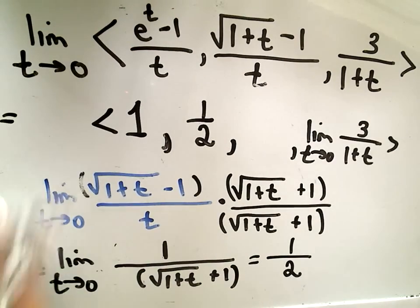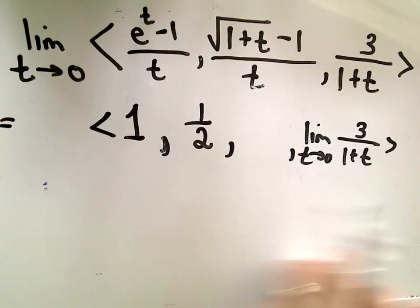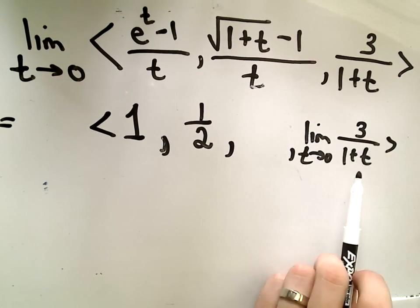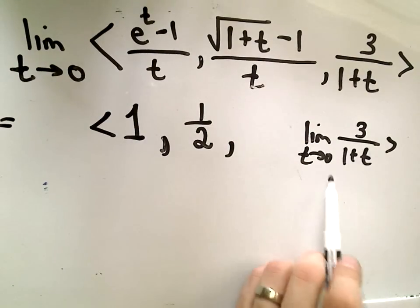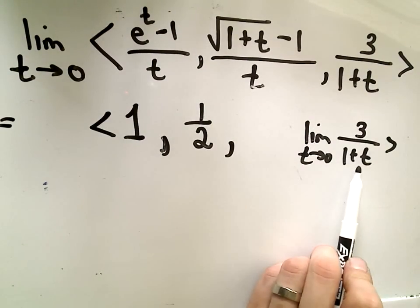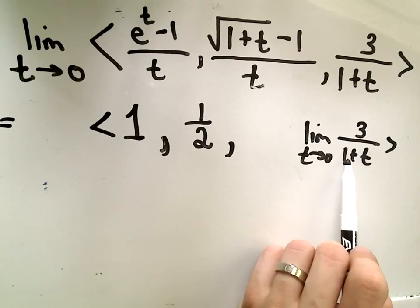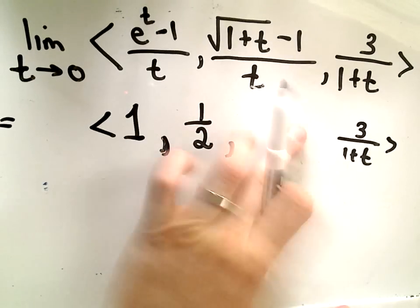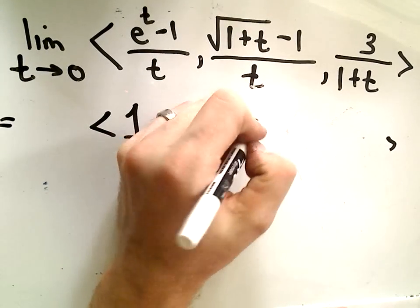Again, with limits, what you try to do is basically plug and chug. You try to just plug the value in. Notice in the last part, if I plug in t equals 0, in the denominator, I'll just get 1. If we plug in t equals 0, we'll get 3 over 1, or 3. And that's going to be the solution to the last part.